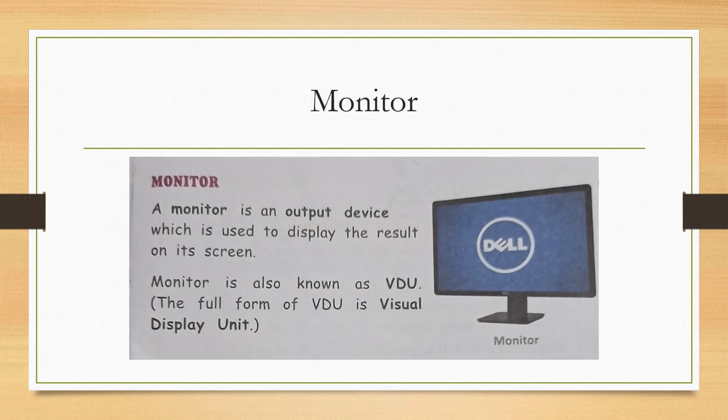We'll start with monitor. The monitor looks like a TV screen. Already we have discussed about monitor in this chapter. It's an output device. In the monitor, whatever we do - either we play, write numbers, or make a drawing - all the results will be displayed in the monitor. Because of this reason, the monitor is known as VDU: V for Visual, D for Display, U for Unit. Visual Display Unit. Because everything is being displayed on the monitor.